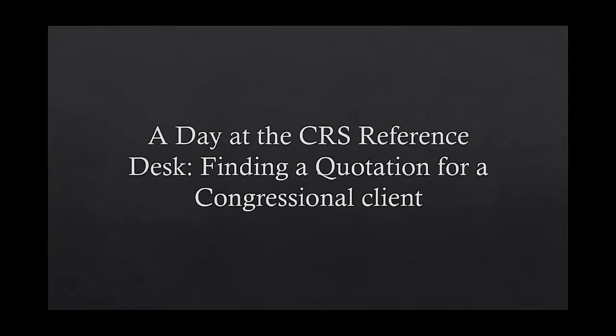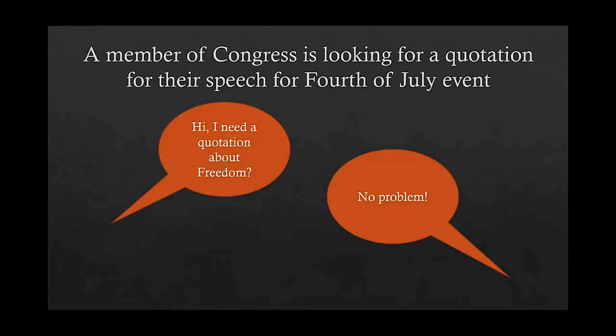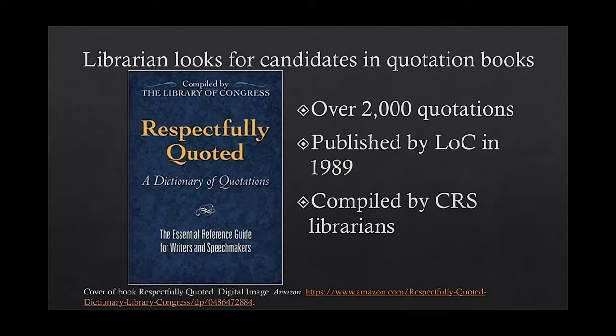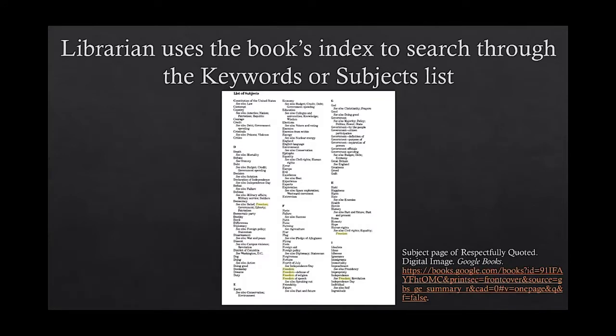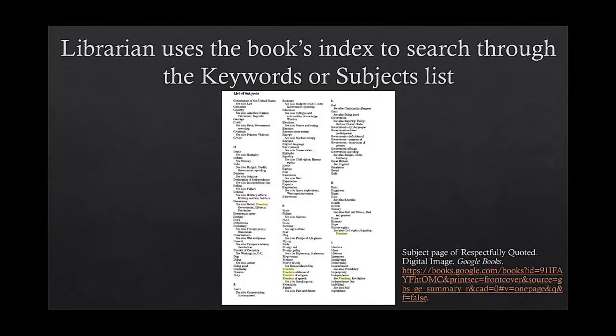Let's look at how a CRS reference librarian currently searches for a quotation for a congressional client. In this scenario, a member of Congress requests a quotation on freedom for their Fourth of July speech. The librarian then looks through their general quotation books, one being Respectfully Quoted. They look for quotations based on a keyword or subject of the topic the requester needed. Now they have a list of quotations to choose from to present to the requester.